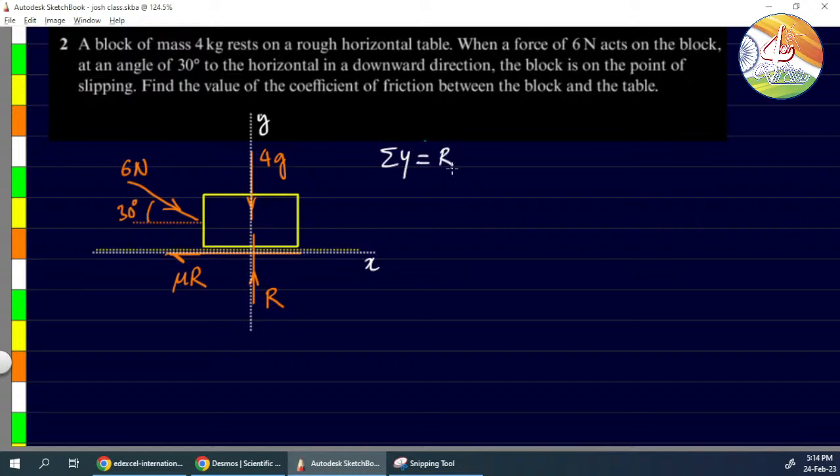R is upward, minus 4g, and the component of this 6N force also acts downward. The vertical component will be sine - 6 sine of 30.